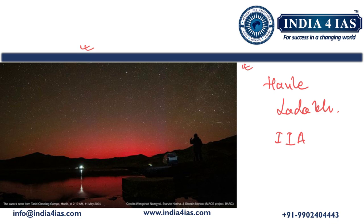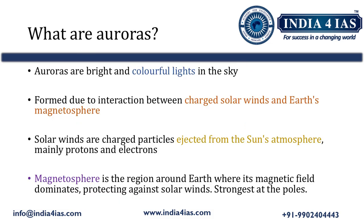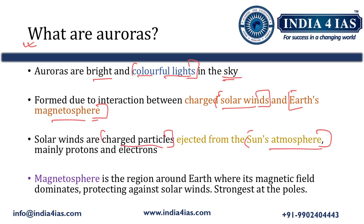Now the question arises: what are aurora lights? Auroras are the bright and colourful lights in the sky. They are formed because of the interaction between solar winds and Earth's magnetosphere. Solar winds are charged particles — mainly protons and electrons — ejected from the sun's atmosphere. The magnetosphere is the region around the Earth where the magnetic field dominates, and it protects Earth from solar winds.